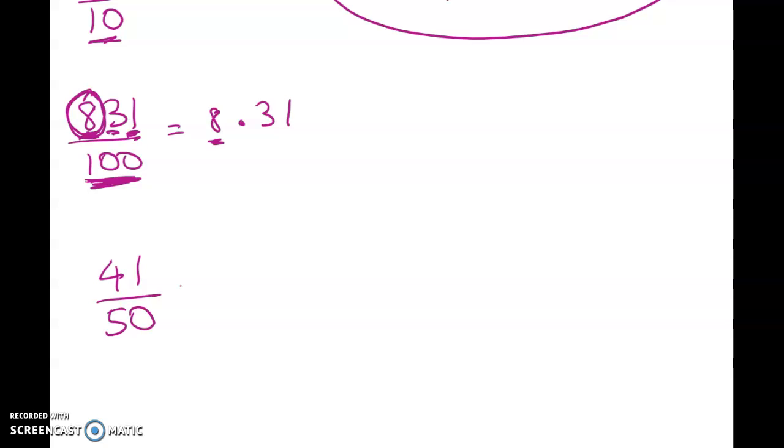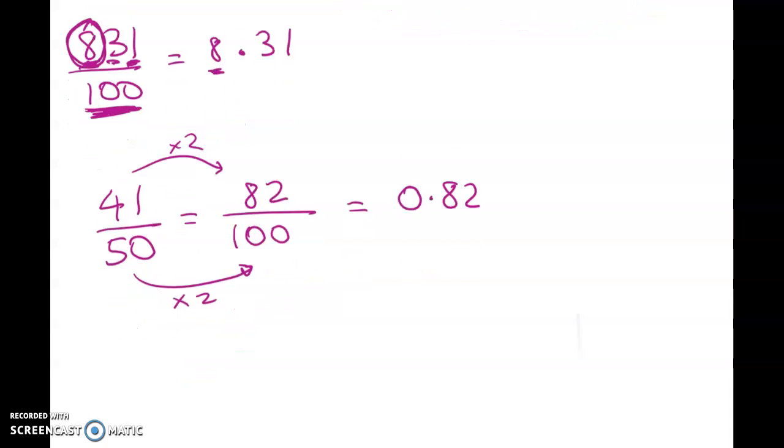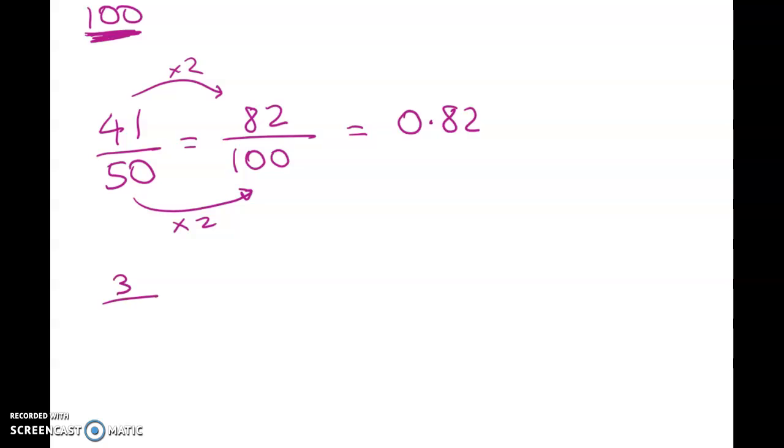If I've got 41 over 50, I have to first use my equivalent fractions to get this to be out of 100. So 50 times what is 100? 50 times 2. 41 times 2 gives me 82. So 82 out of 100, and then it's back to an easy one, so it's going to be 0.82.